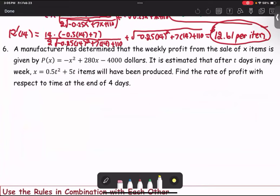In this example, a manufacturer has determined that the weekly profit from the sale of X items is given by P(X) equals negative X squared plus 280X minus 4,000 dollars. It is estimated that after T days in any week,